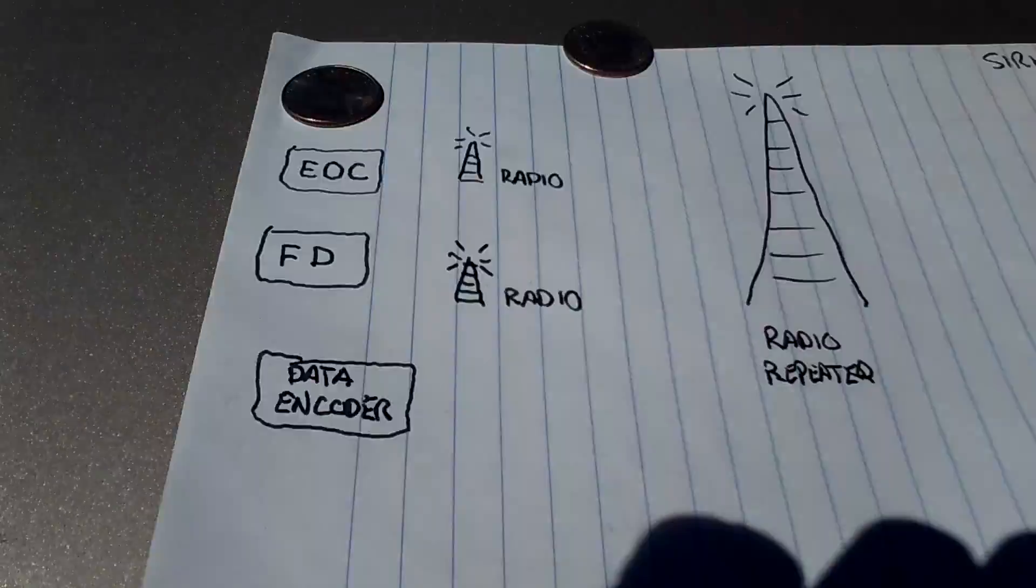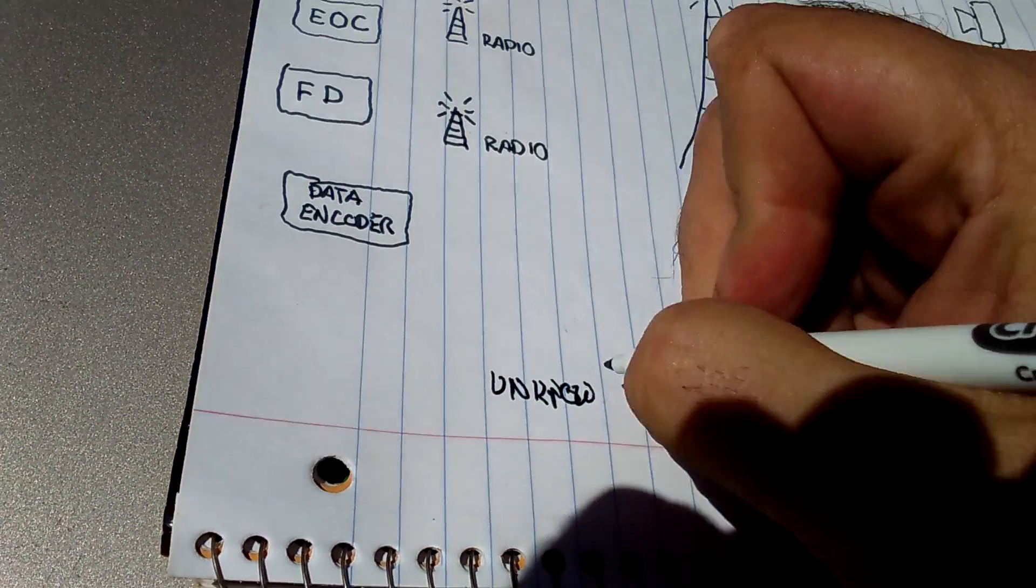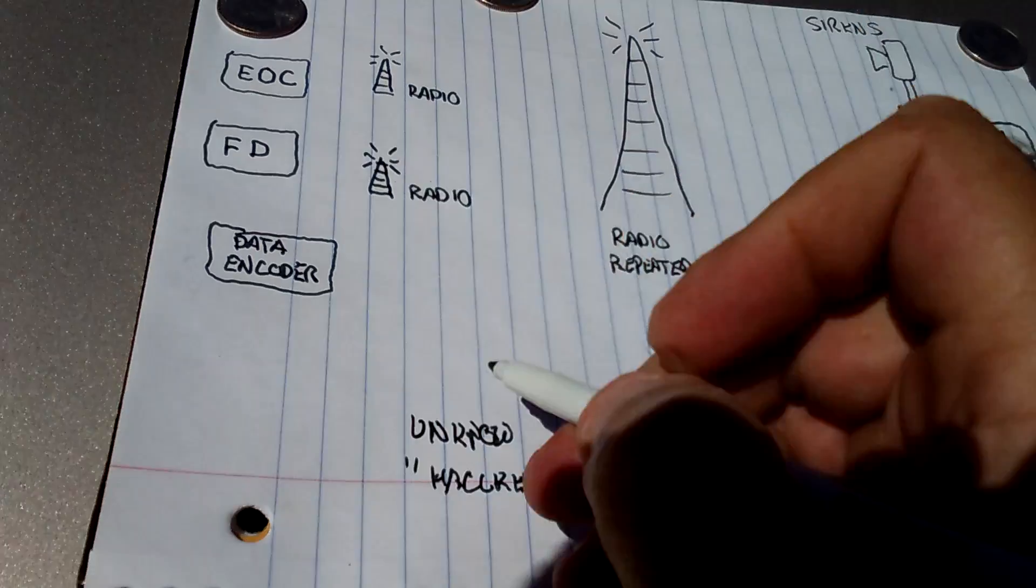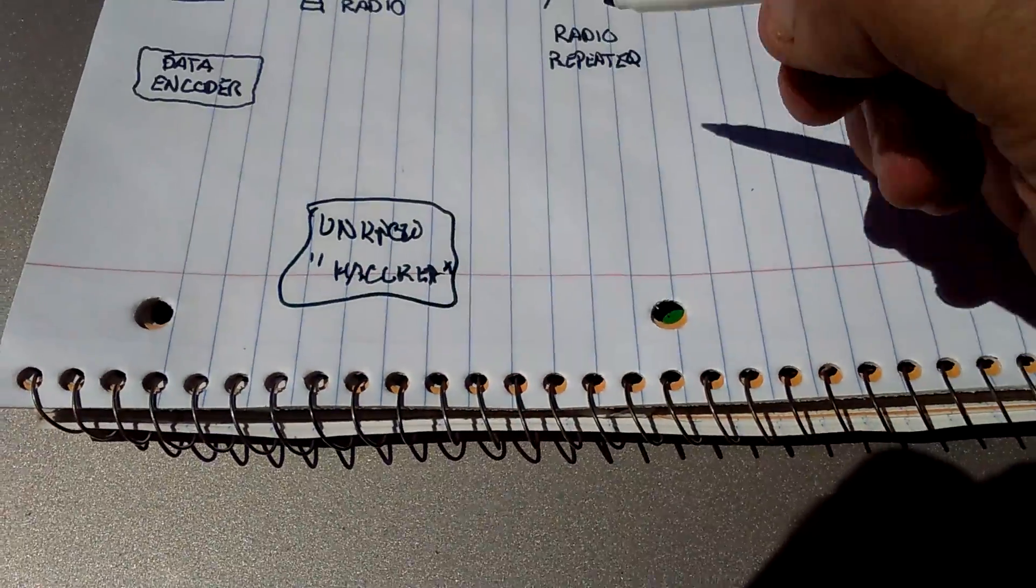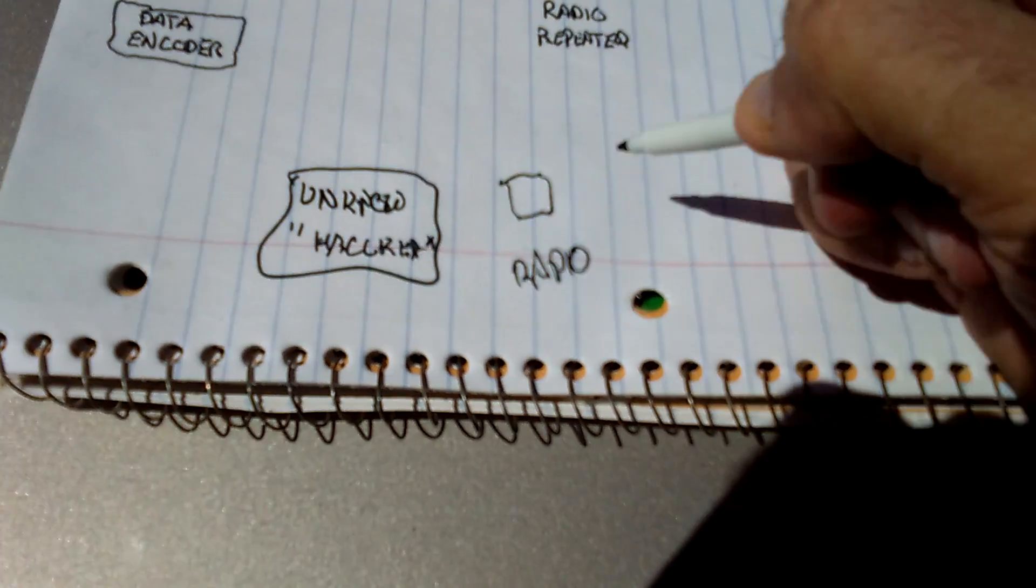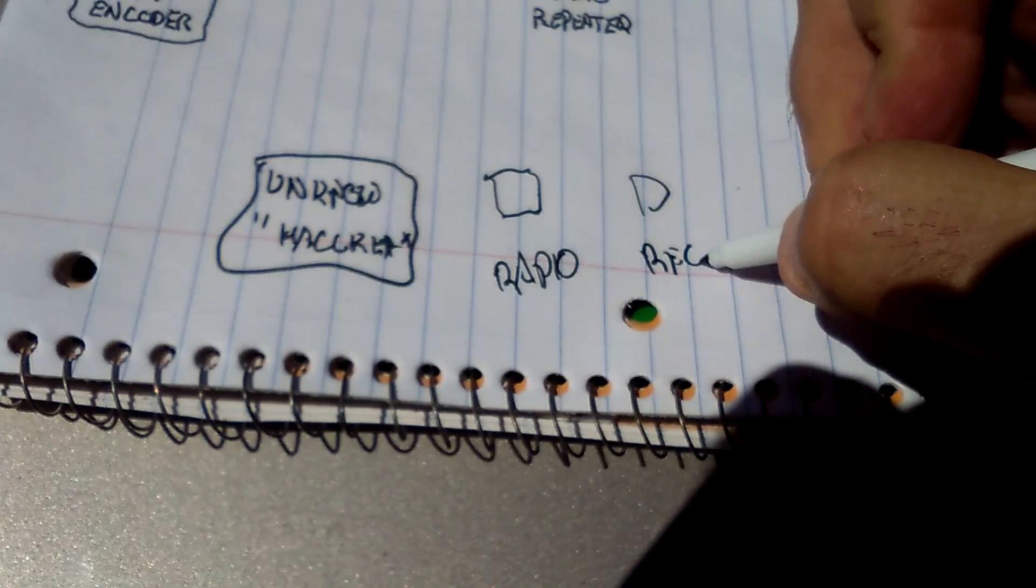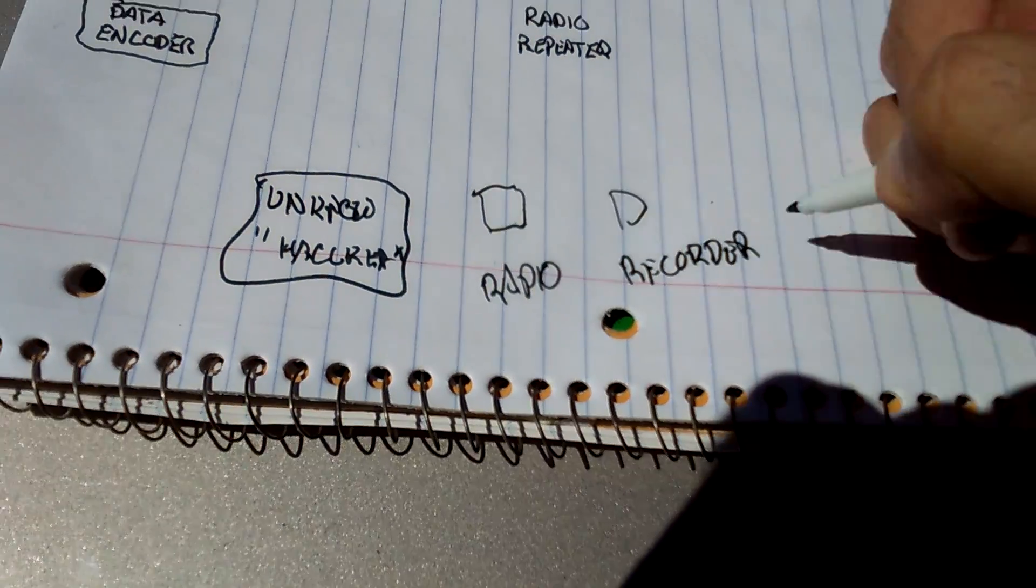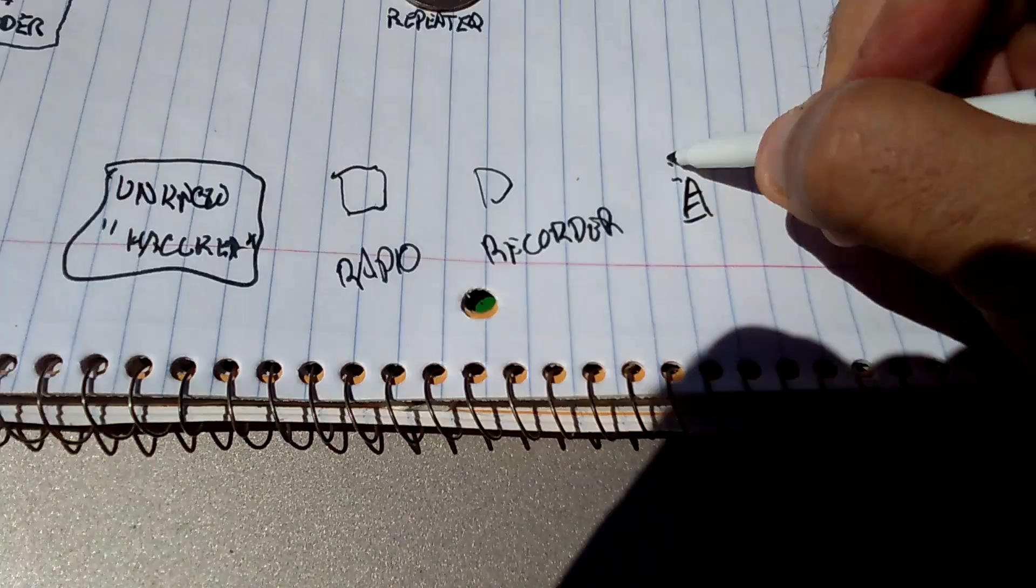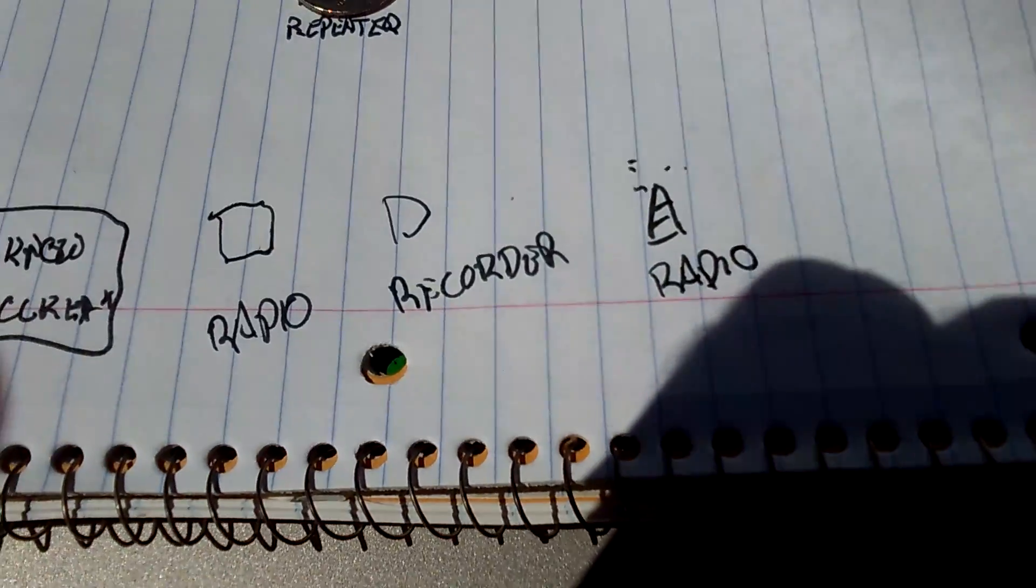What has happened, apparently, on a test day, we have an unknown, quote, hacker somewhere with a monitoring radio, be it a scanner or what have you. Some sort of digital recorder. It doesn't have to be digital. It can be analog. And a cheap radio. Probably bought off of eBay for less than $30.